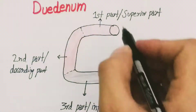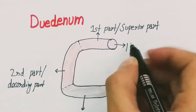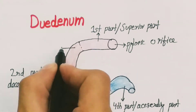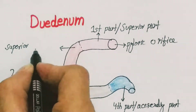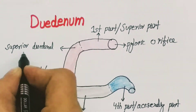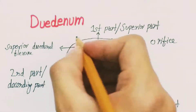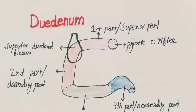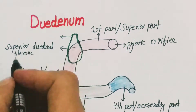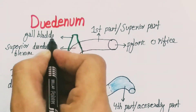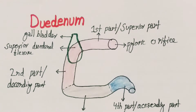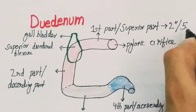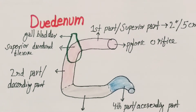The first part of the duodenum is marked on the left side by an orifice called the pyloric orifice. On the right side, it is bounded by a flexure called the superior duodenal flexure. A flexure is any bending in the intestines. At this level, we have the neck of the gallbladder. The length of the first part of the duodenum is about two inches or five centimeters.